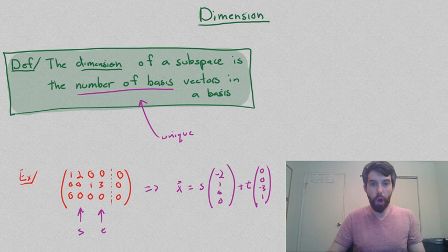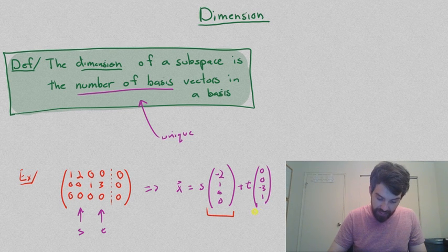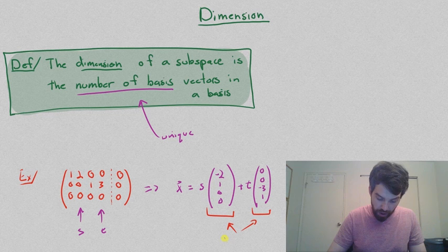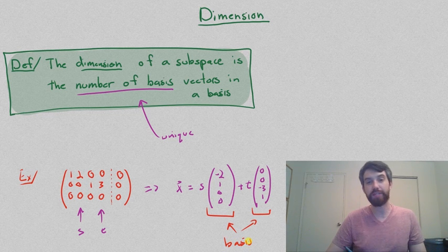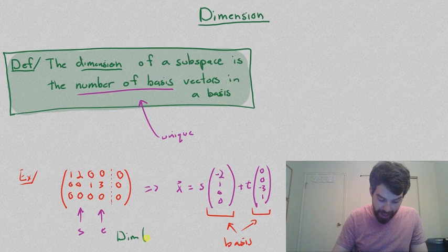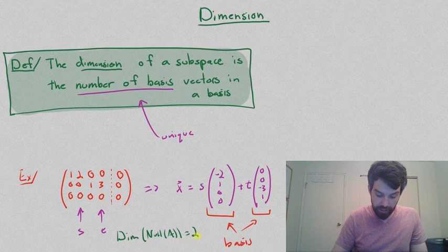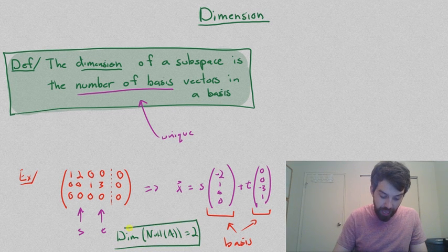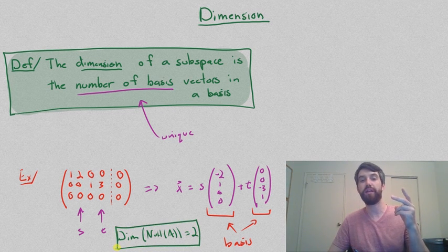And then you'll recall that if we wanted a basis for the null space, that those two vectors together are going to form our basis. And so if my question is, what is the dimension of the null space of this matrix A, the answer is therefore 2 because I have these two different basis vectors.